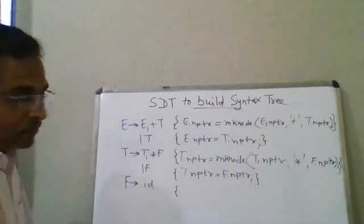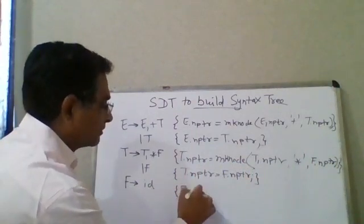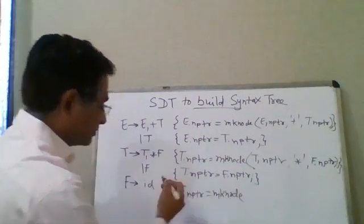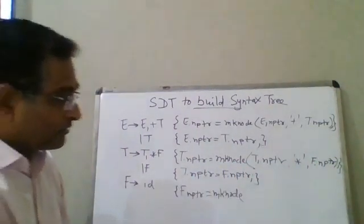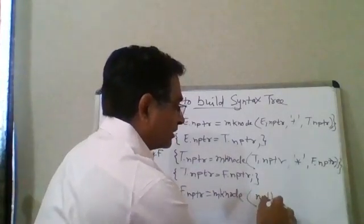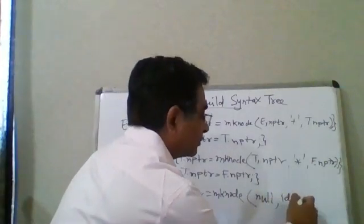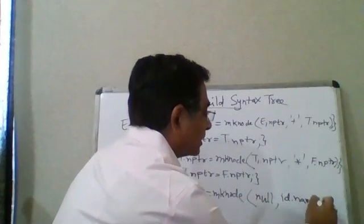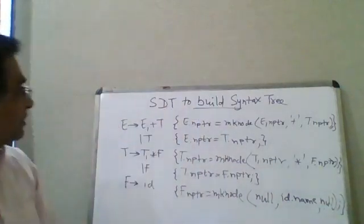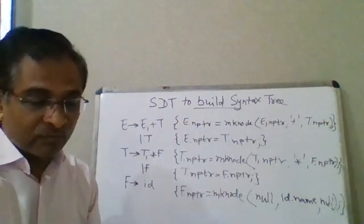For F → id, F dot nptr equals make_node with null on the left, the actual identifier value id dot name in the middle, and null on the right — because it is a leaf node. This completes the SDT action part for building the syntax tree.